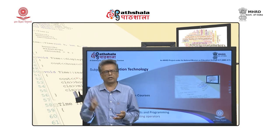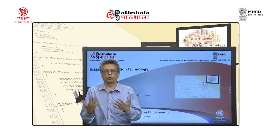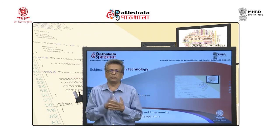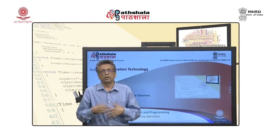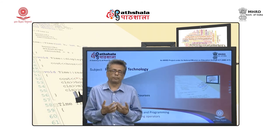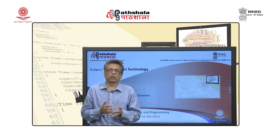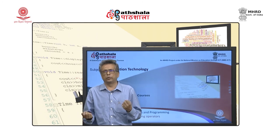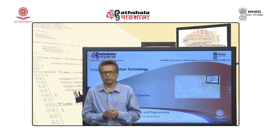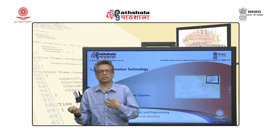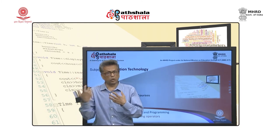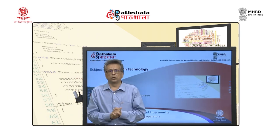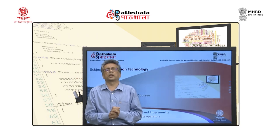To conclude our module on RTTI and casting operations: we have seen four casting operators provided by ANSI C++. Dynamic cast is used for polymorphic objects. Const cast converts contextual constants to non-const. Static cast is for normal C-type casting operations. Reinterpret cast is for uncommon operations like converting an integer to int*. Thank you, friends.